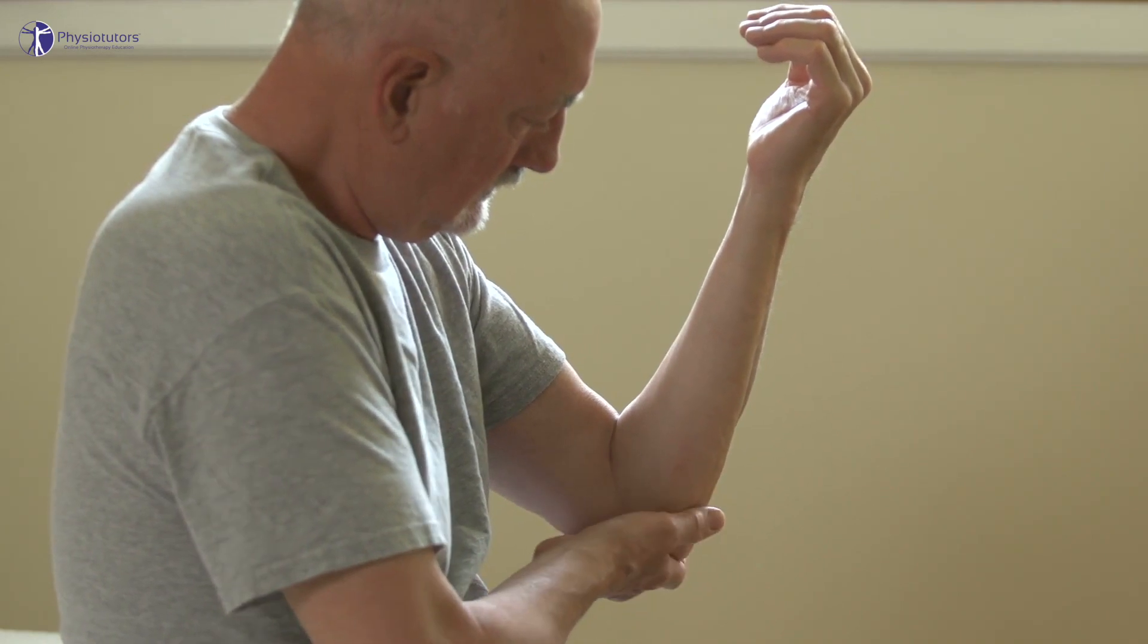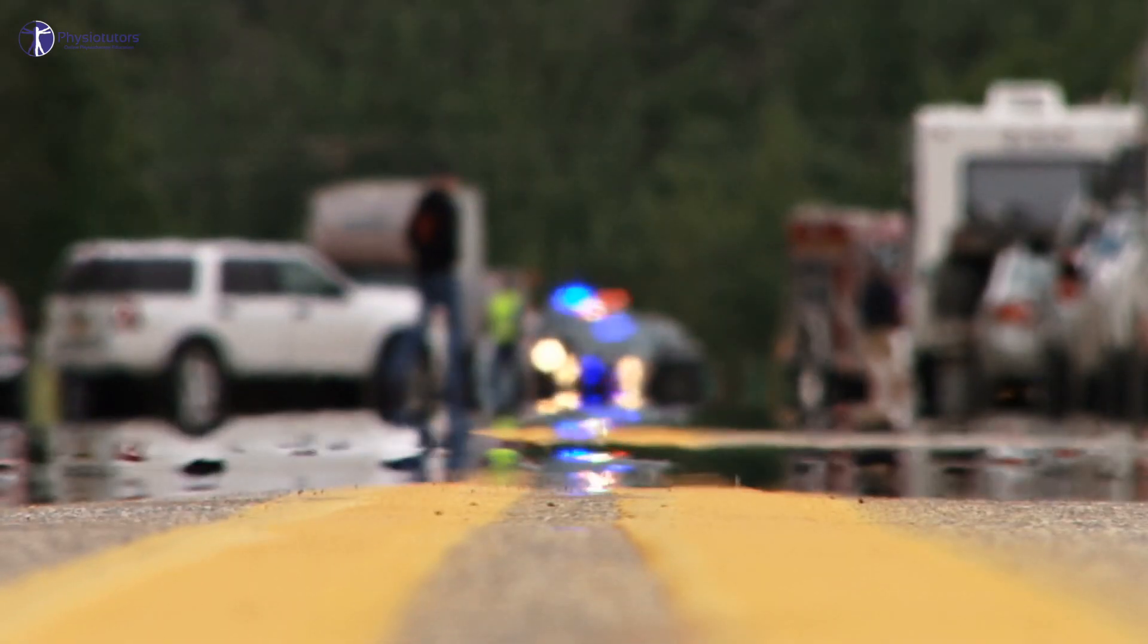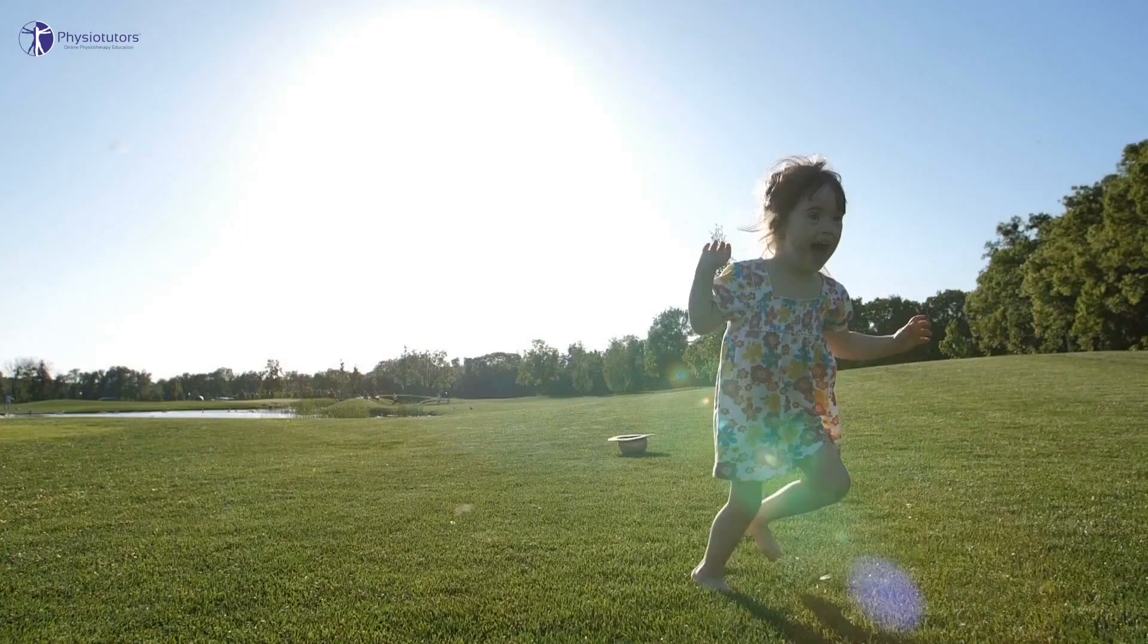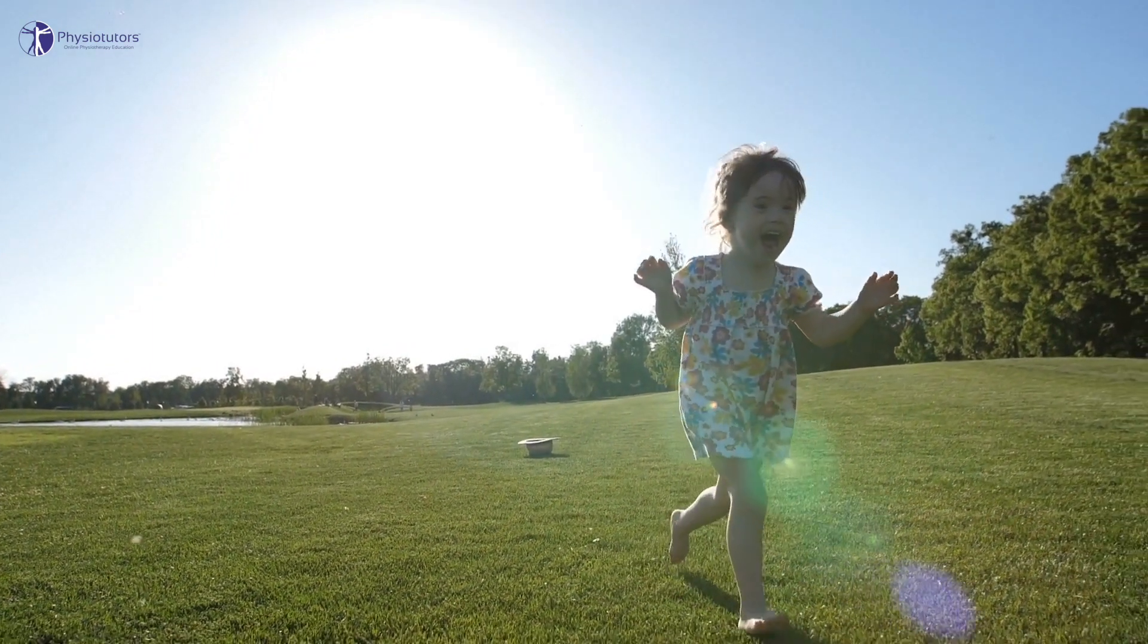Hi and welcome back to Physiotutors. Upper cervical spine instability has a prevalence rate of 0.6% according to Beck et al. in 2004 and is associated with inflammatory conditions such as rheumatoid arthritis, ankylosing spondylitis, as well as trauma and congenital deviations such as Down syndrome or Marfan's disease.